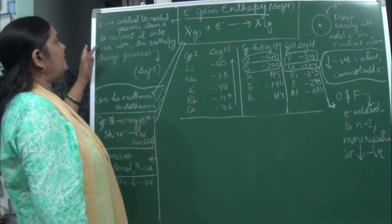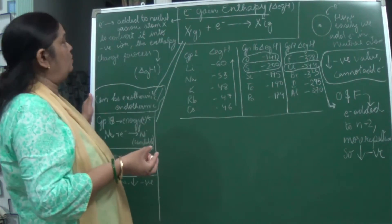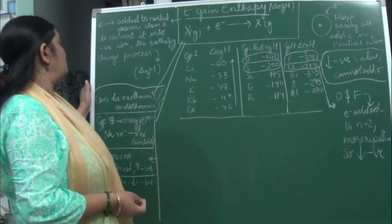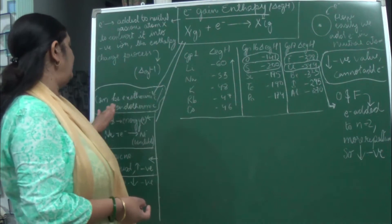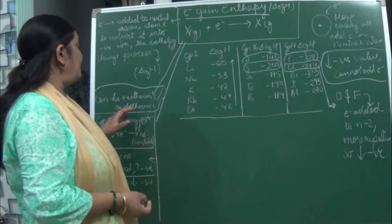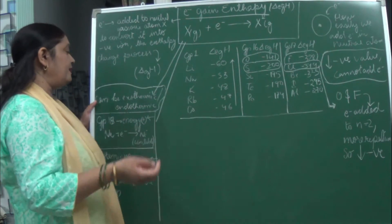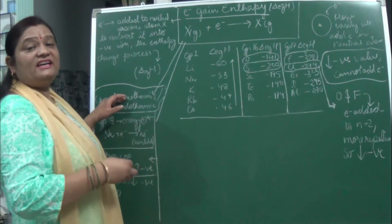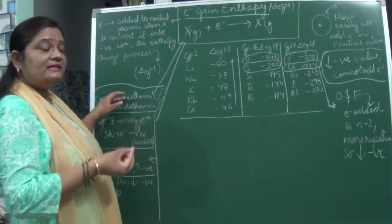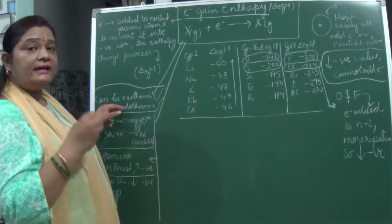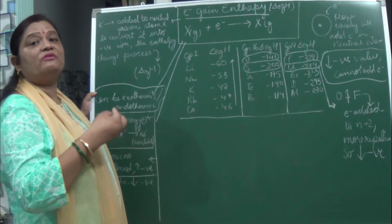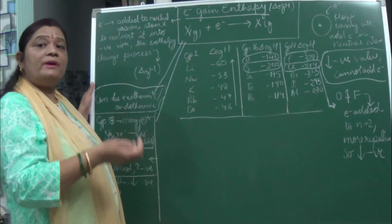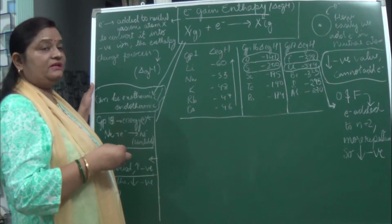When an atom takes an electron, it naturally changes into a negative ion. Electron gain enthalpy can be exothermic or endothermic. The energy can be released if the atom can easily take the electron. But if it can't take the electron easily, it will be an endothermic process in which a tremendous amount of energy will be used up in accepting the electron.